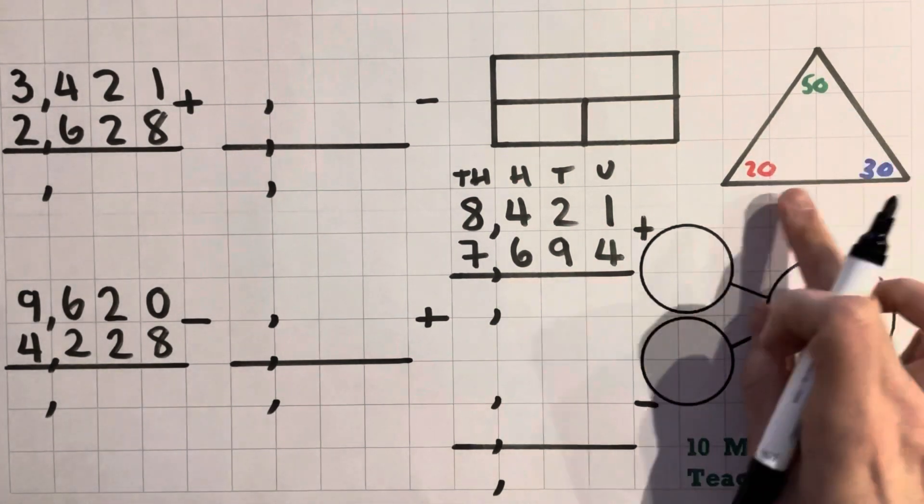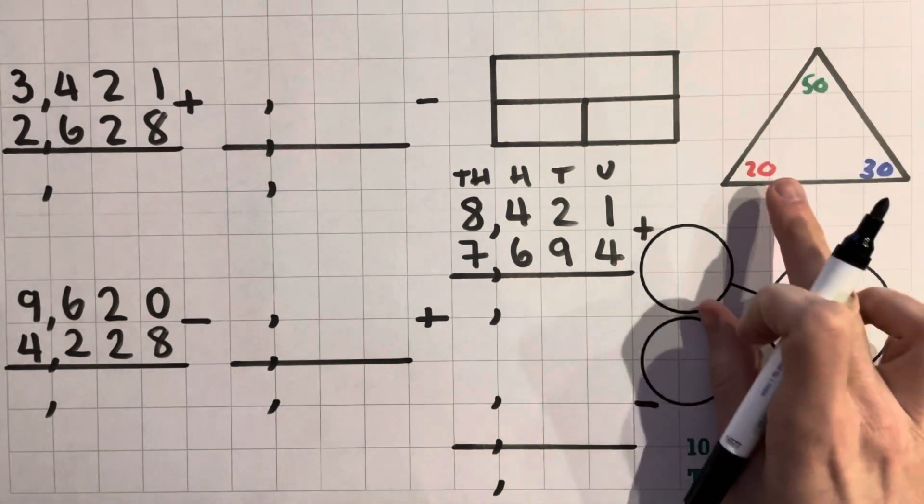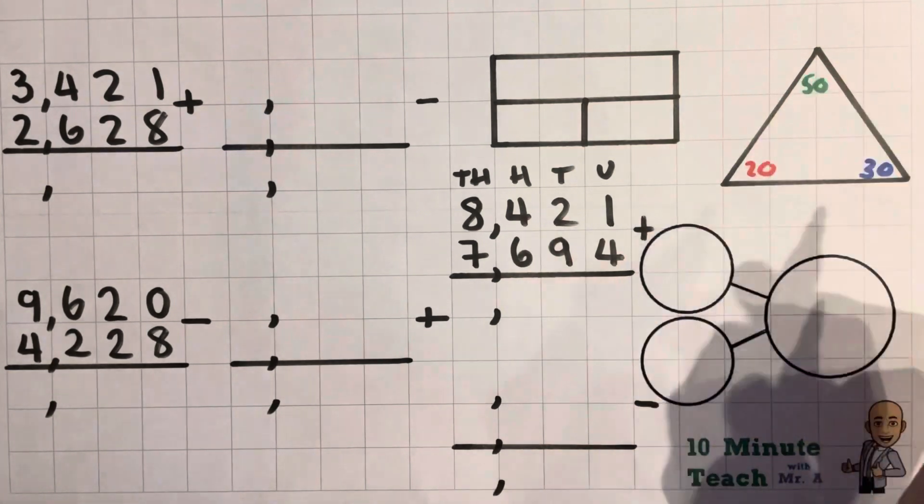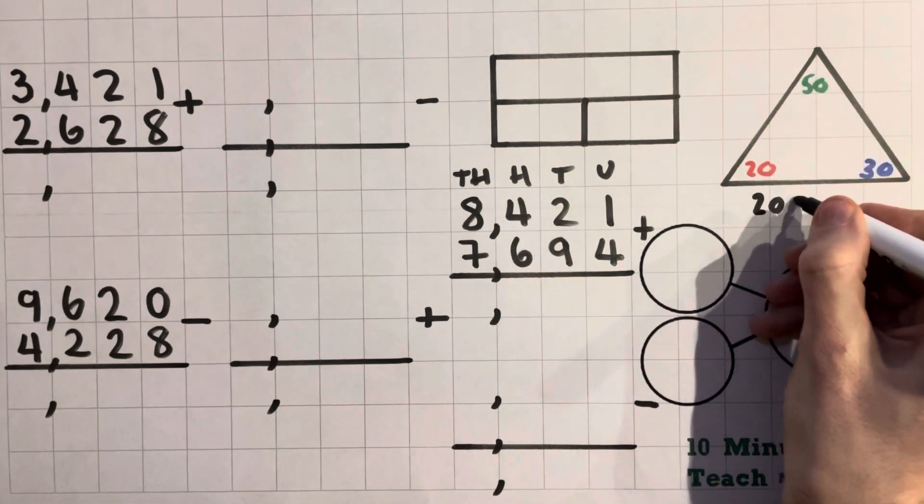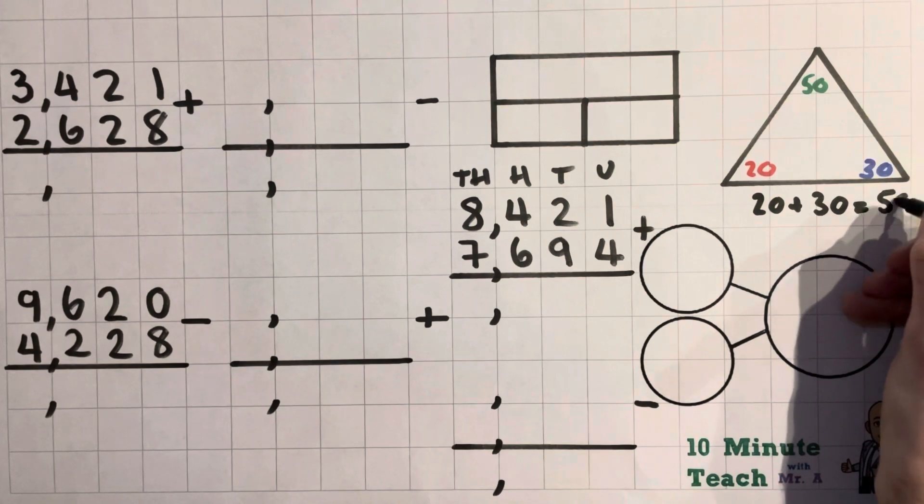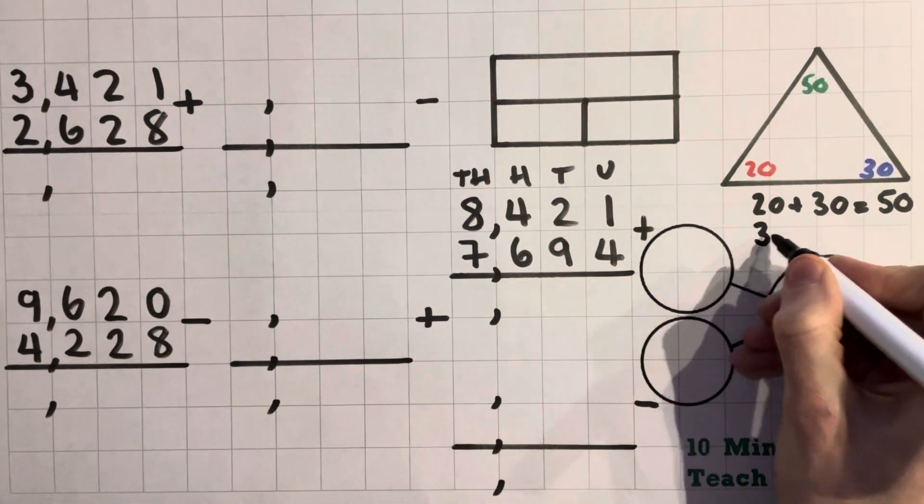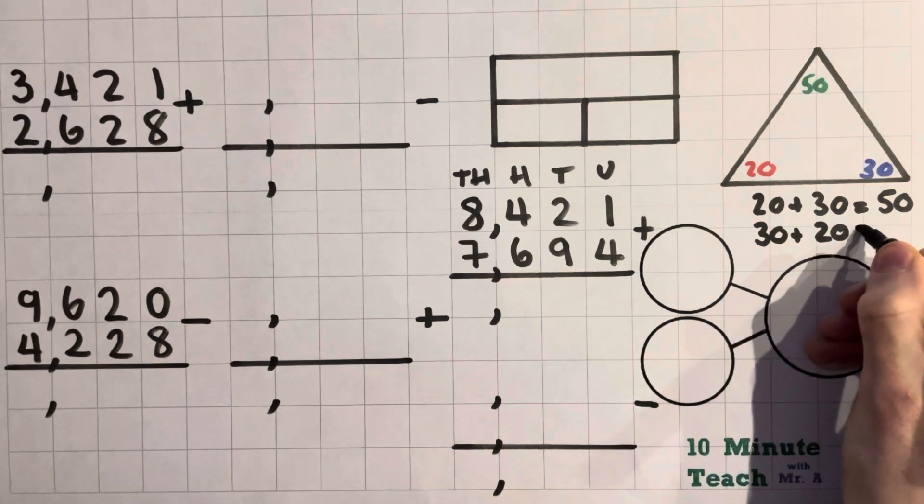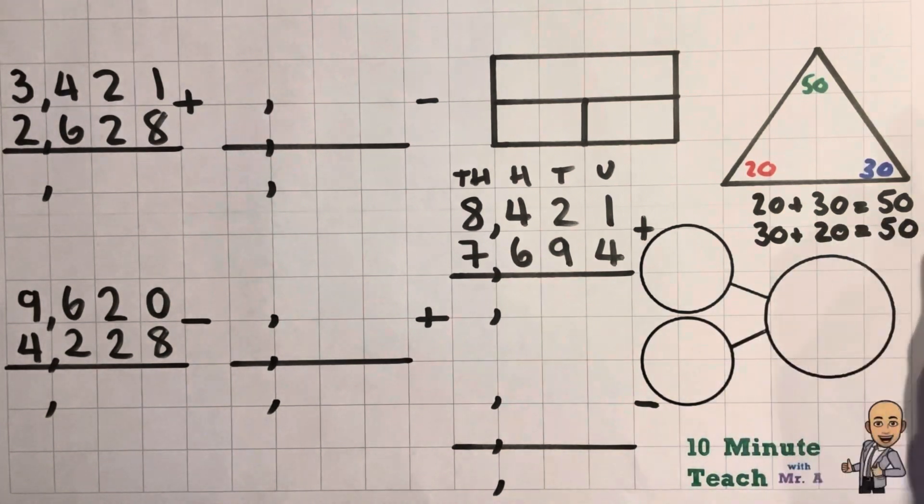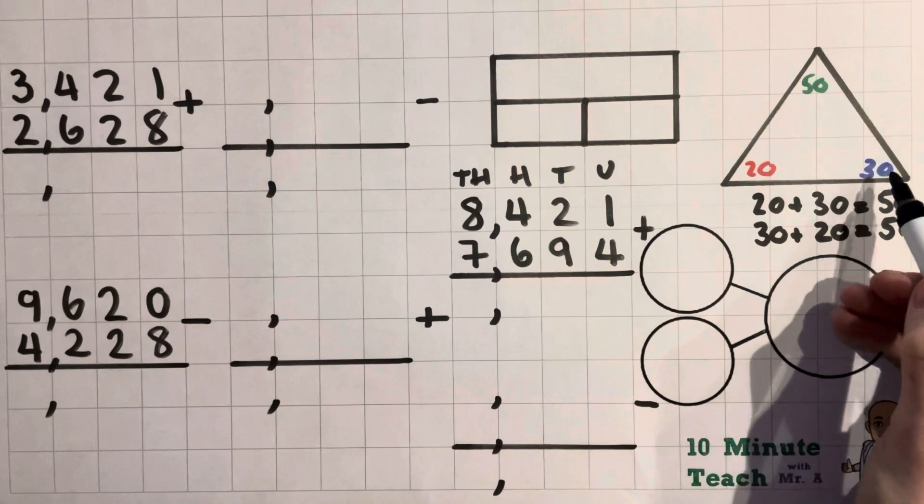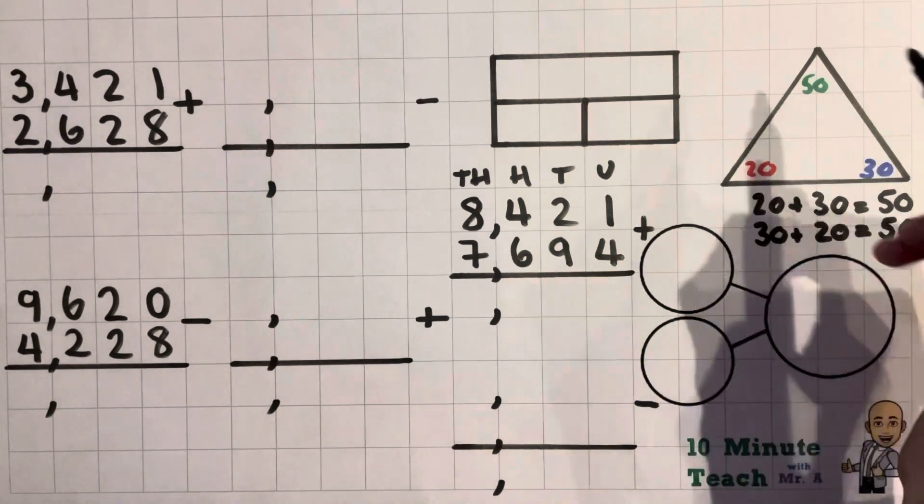So I'm going to start where my answer is 50. So 20 add 30 is 50. Let's write those down. Okay, and also 30 add 20 is 50. So you can see that 30 add 20, 20 add 30 make 50.